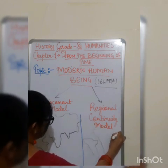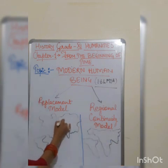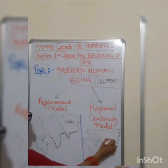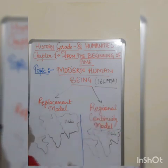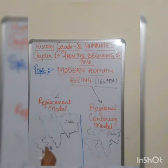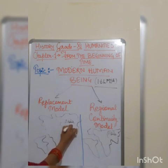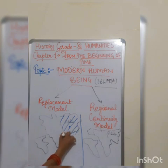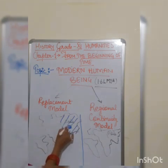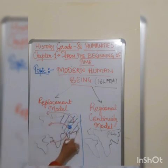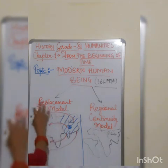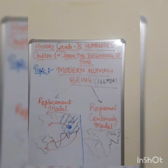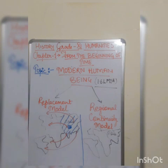With the help of a world map sketch, let us understand these models. According to the replacement model, it is assumed that modern humans might have originated in one place only — suppose Asia — and then from there all breeds or species of modern humans migrated to different continents and then evolved there. This is called the replacement model.